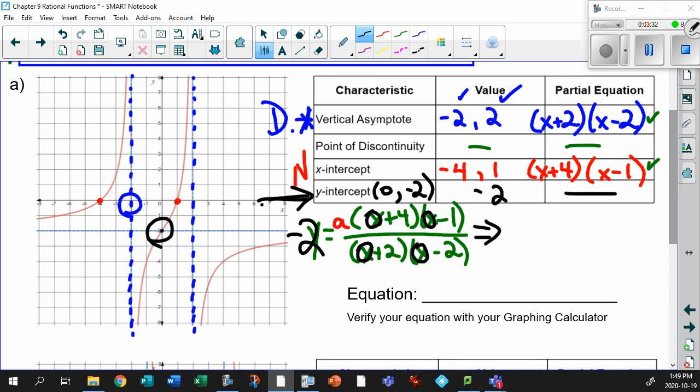Look how easy this is. So rewriting this, minus 2 equals 4 times the minus 1. That's minus 4. Over 2 times minus 2, which is also minus 4. And don't forget that a value. That was right here. So there's the a value. So if you think about it, this is minus 2 equals, well, minus 4 over minus 4 is 1. 1a. So there's your a value. Your a value, in fact, is minus 2.